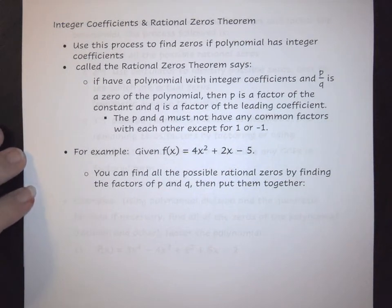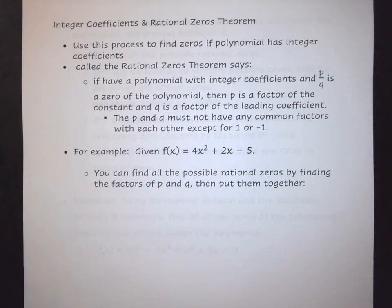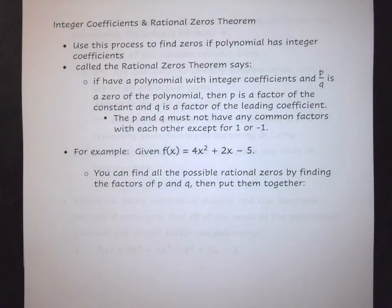Here, we're going to look at some different dealings with the Rational Zeros Theorem. Essentially, this is taking a polynomial and looking at the constant term and the coefficient of the leading term, creating what's called all possible rational zeros of that polynomial. This is a way to find potential zeros of a polynomial, or values to use in your synthetic division process.